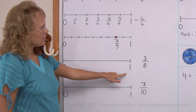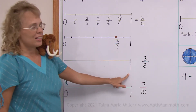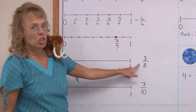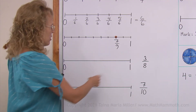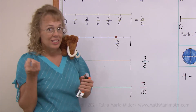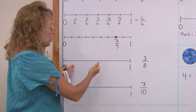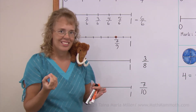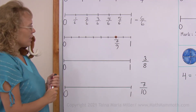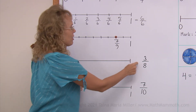Over here is a number line again from zero to one, and our task is to mark three eighths on it. Where is three eighths on this number line? What we need to do is first divide this number line into eight parts. We need to mark the tick marks, and then after that we can mark three eighths.